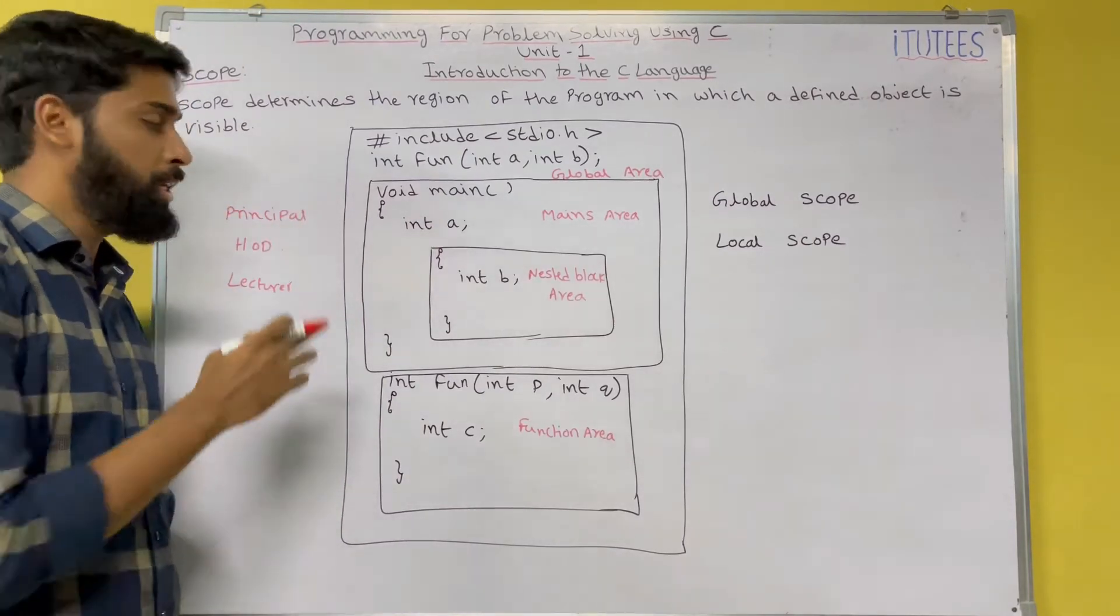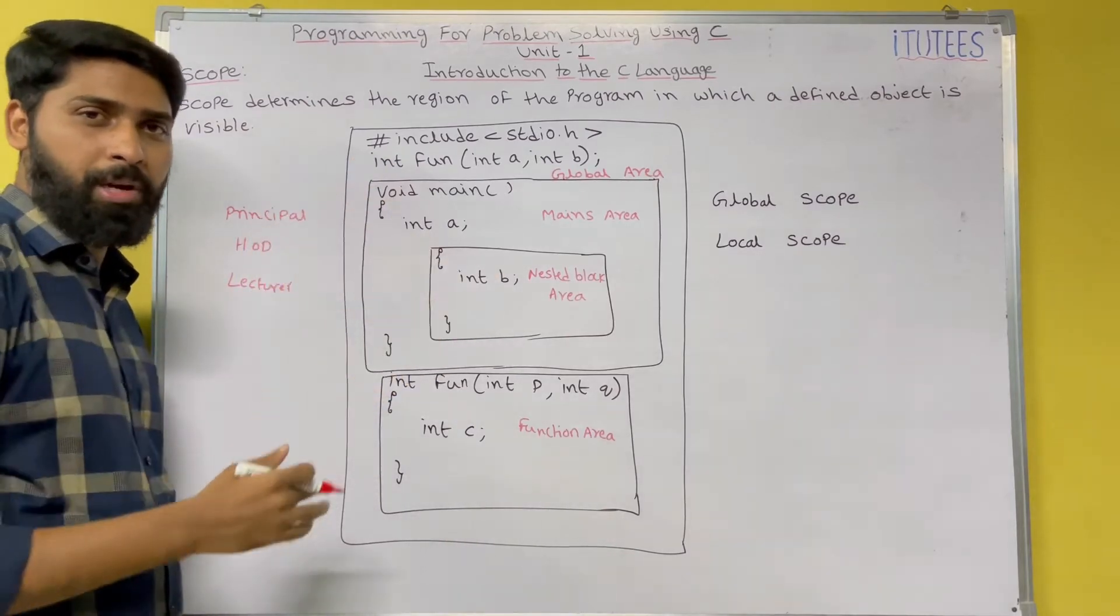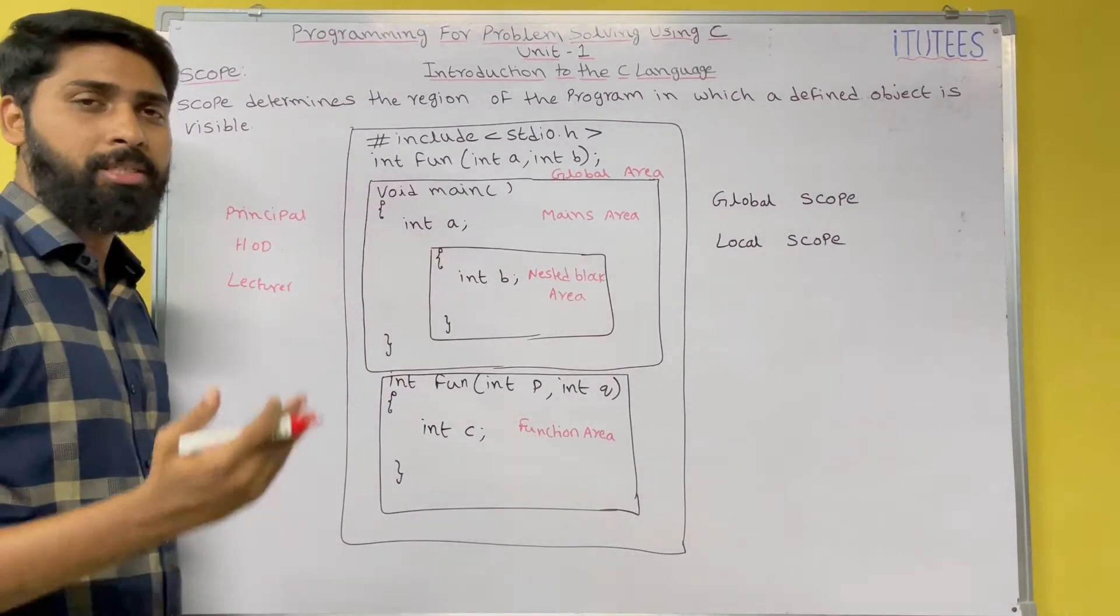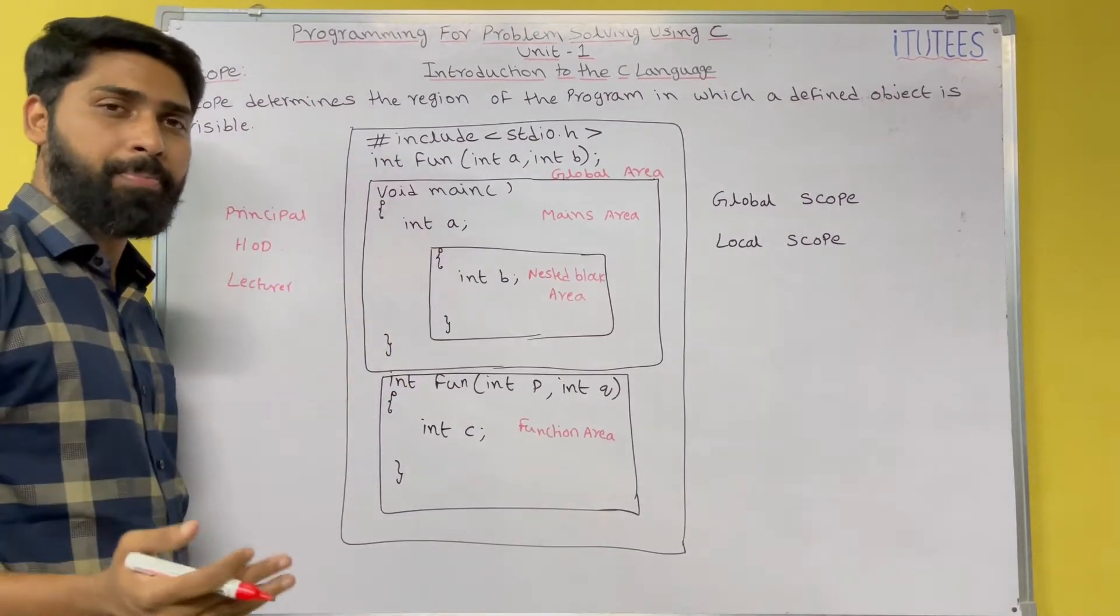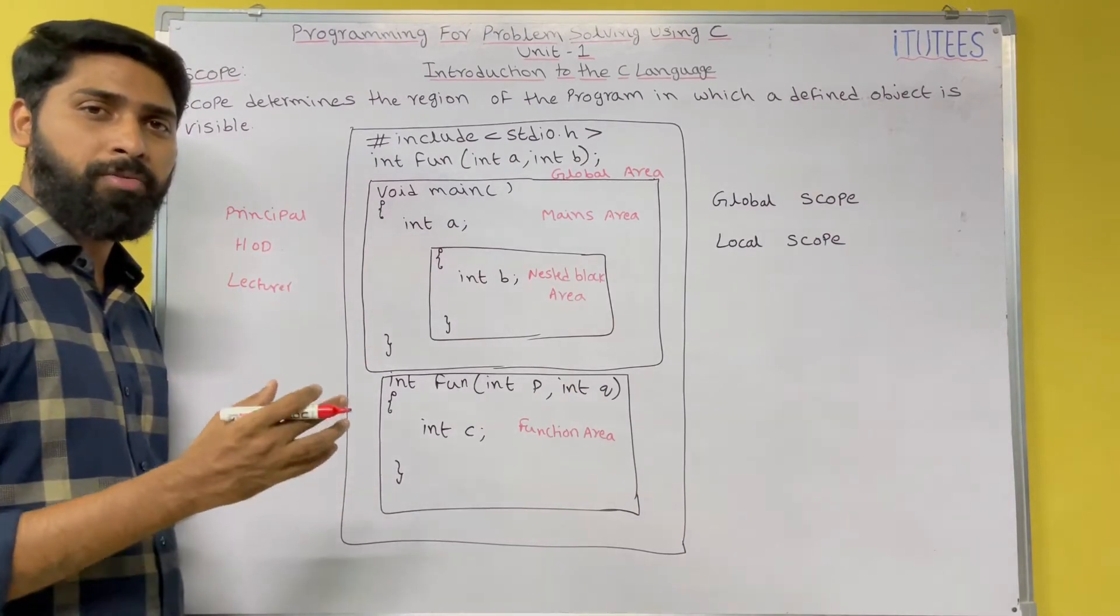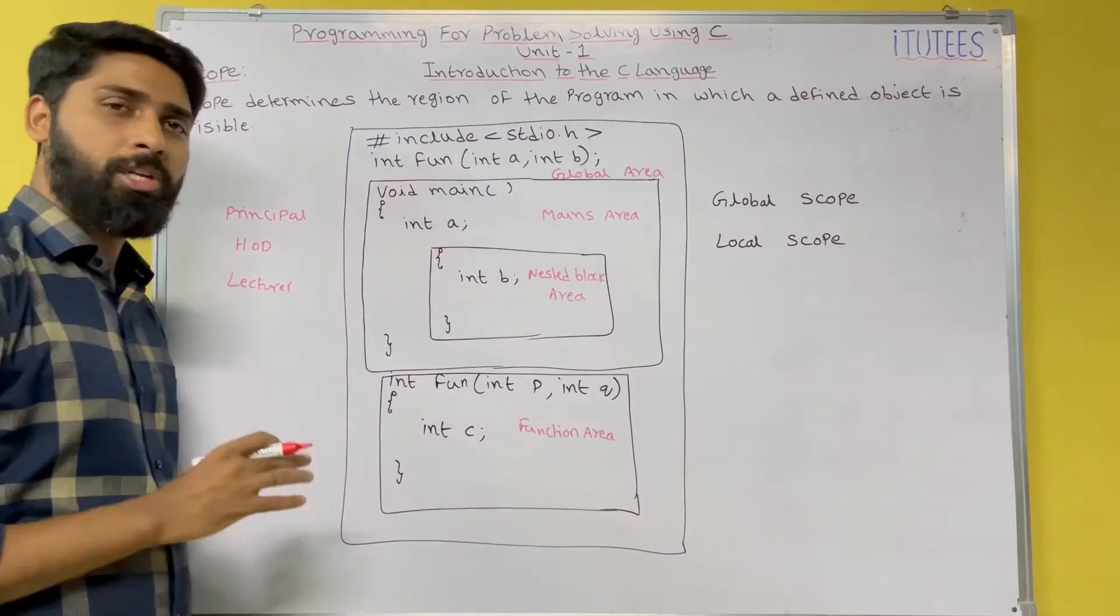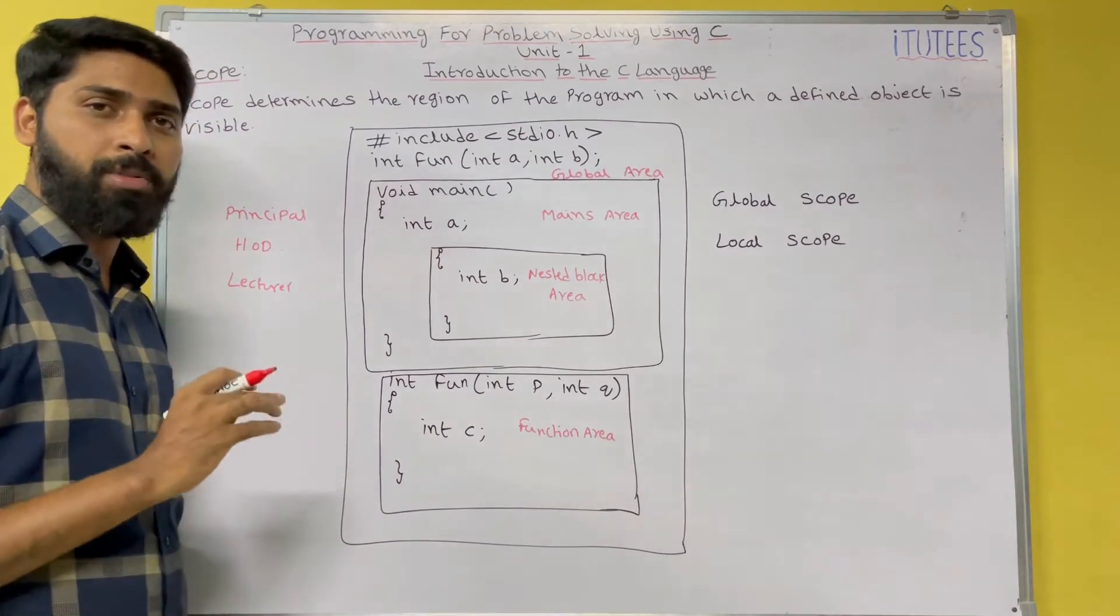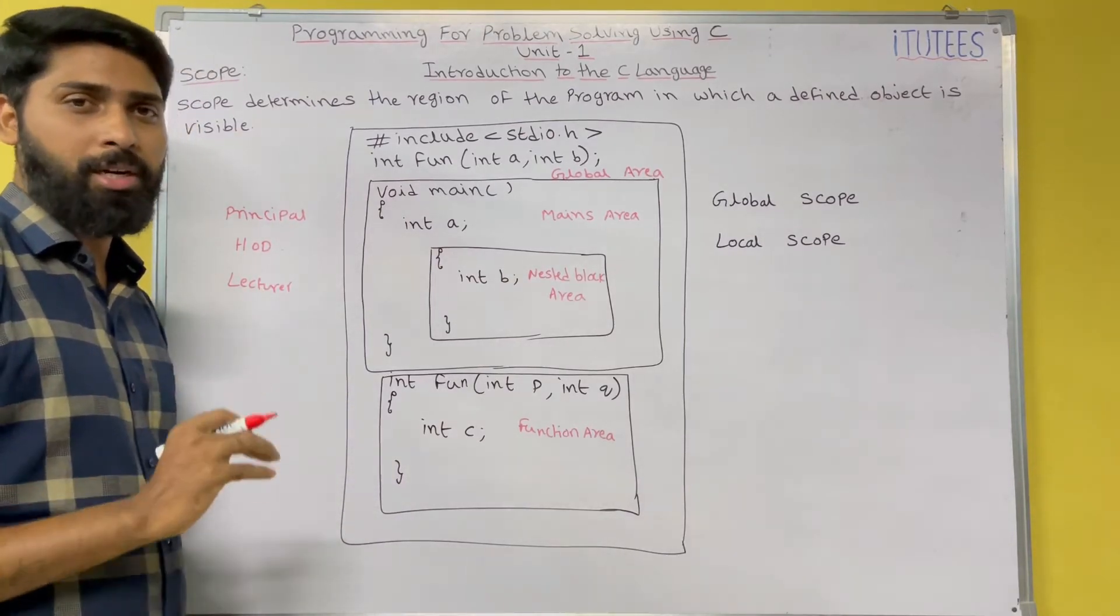So let us think these are the objects. So Principal object is global. You can access the Principal from any department. HOD, you can access the HOD object from a specific department only. So Lecturer, you can access this object from a specific classroom.